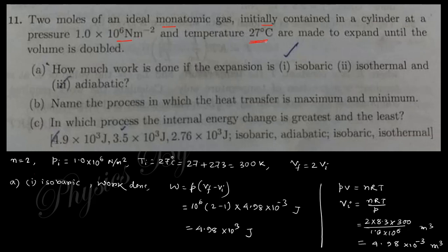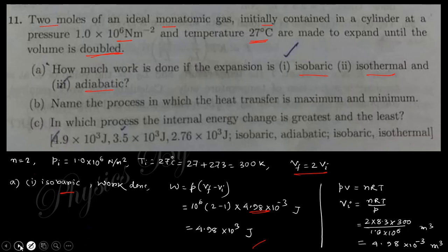Two moles of ideal monatomic gas initially at pressure P = 10⁶ Pa and temperature 27°C (300 K) expand until the volume doubles. Work done is calculated for three processes: isobaric — W = P·ΔV = P(V_f - V_i). The initial volume V_i = nRT/P = 2×8.314×300/10⁶. With V_f = 2V_i, the isobaric work done is computed by substituting these values.